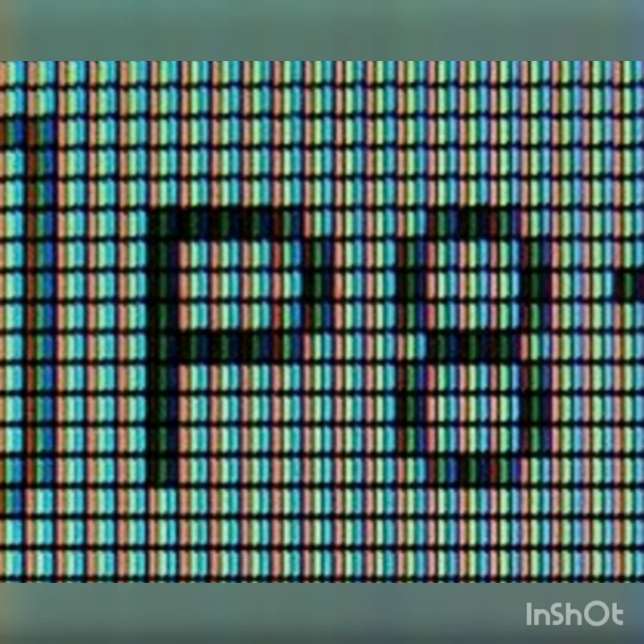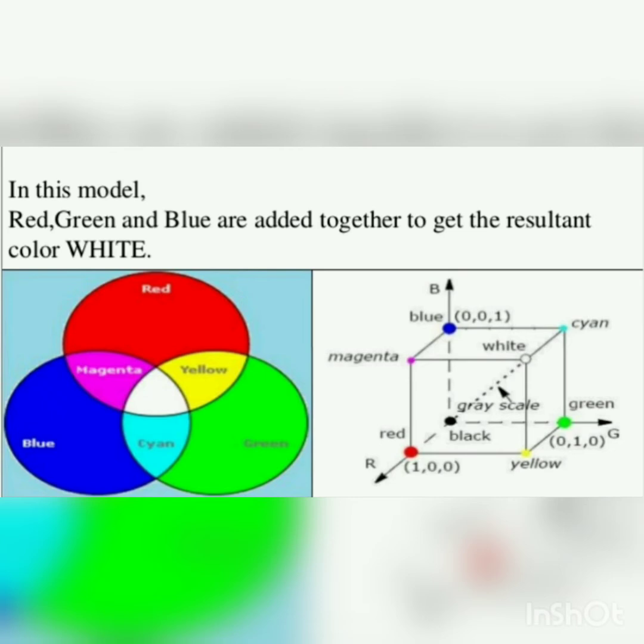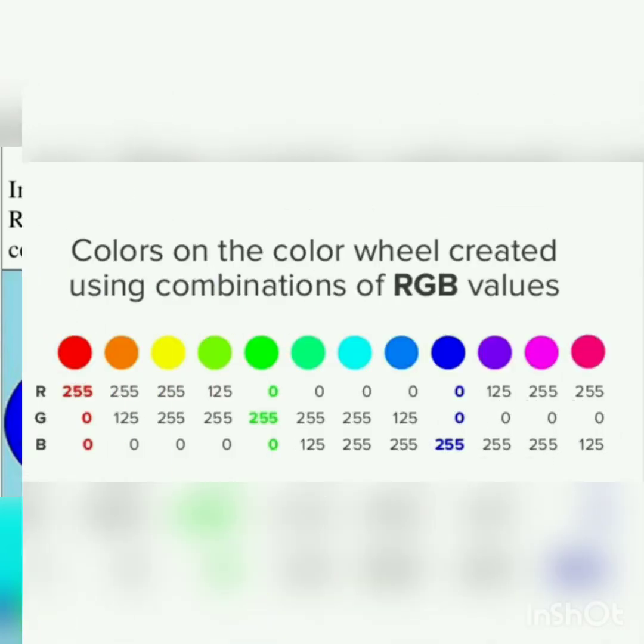Pixel converts into color pixels. Pixel consists of three colors: red, green, and blue. If we add red and blue, magenta is formed. Red and green gives yellow color. If blue and green is added, then cyan is formed. Combination of red, green, and blue gives white color. All these color changes depend on the intensity of RGB.